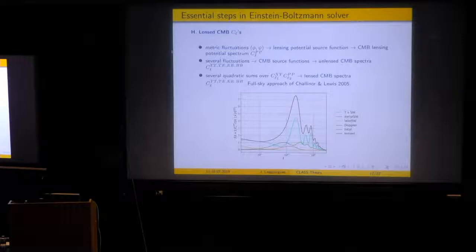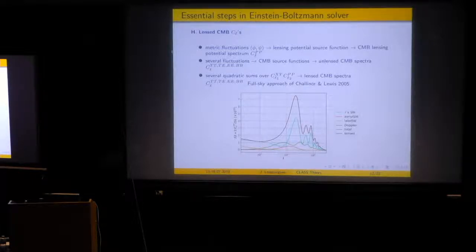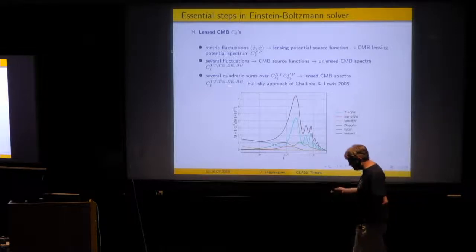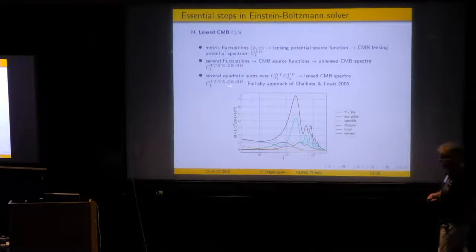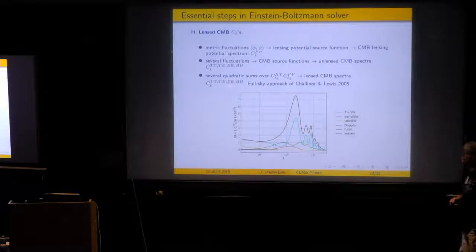Any modern Einstein-Boltzmann code must go through these steps from A to H, and they can be done sequentially. Now I will give more specific details about the less trivial aspects of each step in CLASS. Step A — background integration — is rather trivial. But if you want to complicate your cosmology, you need to understand how the background module formalizes things.